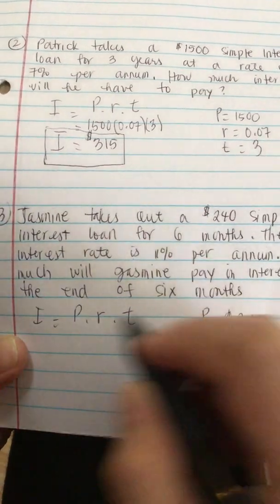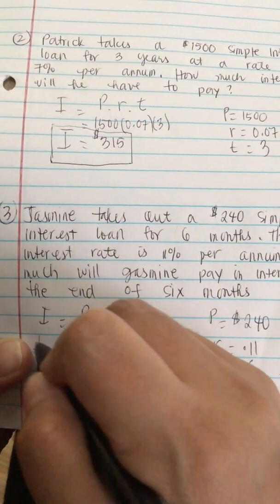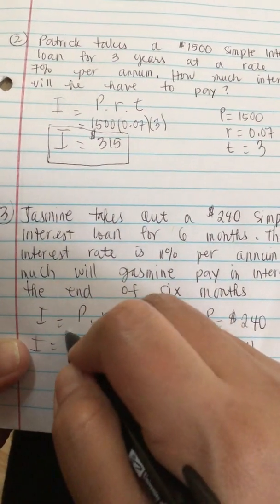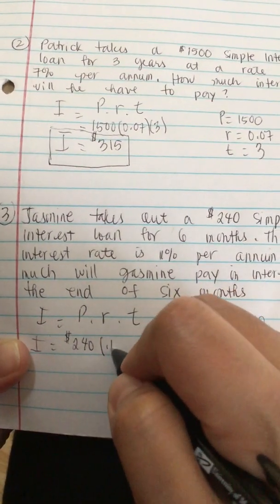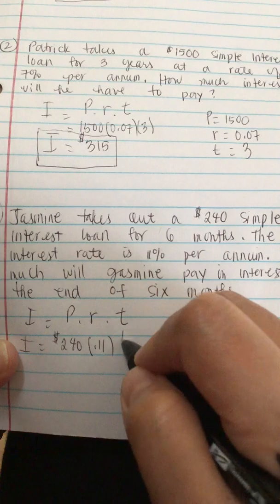So now we plug in our numbers into the equation. I is equal to P which is 240 times R 0.11 times T which is 1 half.